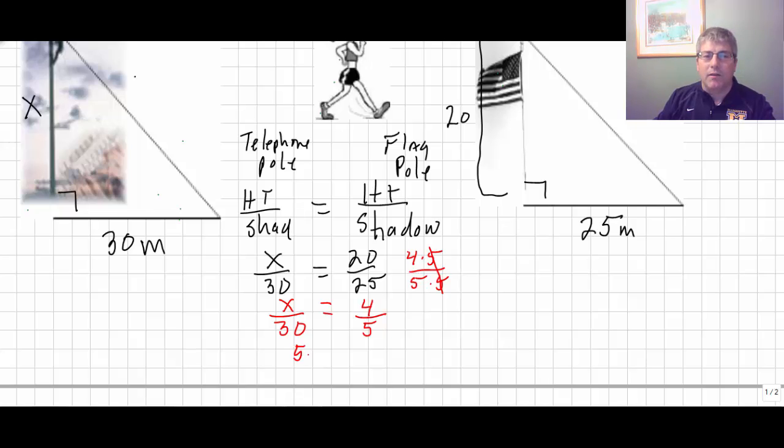We multiply the means and extremes. We get 5x equals 120. And x is equal to 24. So, then we know that the telephone pole is 24 meters high. And working with proportions, this totally makes sense.